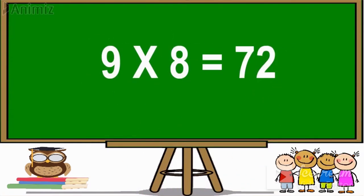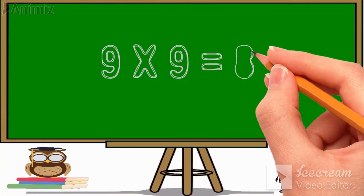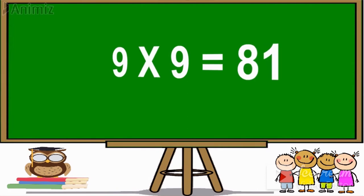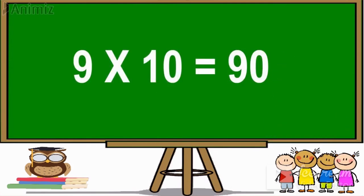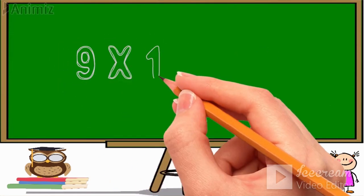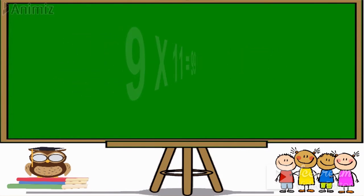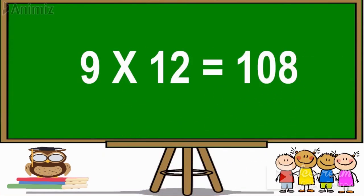9 eights are 72. 9 nines are 81. 9 tens are 90. 9 elevens are 99. 9 twelves are 108.